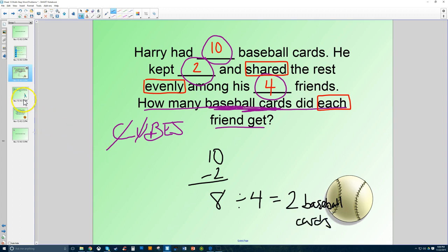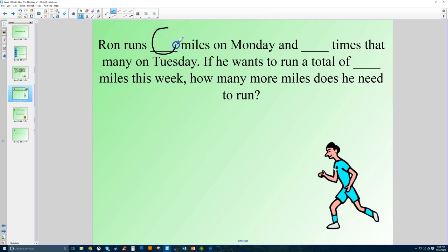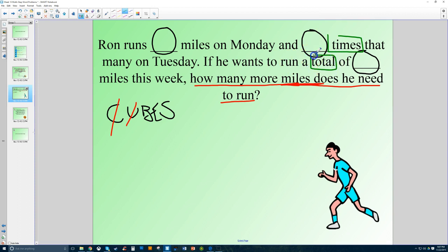Let's take a look at another one. Ron runs a certain number of miles on Monday and a certain times that many on Tuesday. So I know that on Tuesday he runs more than on Monday. So I know that's going to be some multiplication there. If he wants to run a total of... So this is obviously a larger number. If it's a total of miles this week, how many more miles does he need to run? So I have already taken care of the circling my numbers, or lack thereof, as there aren't any numbers actually in this. But we'll fill those in later. Underlining the question is my next part. So how many more miles does he need to run? And then B, I'm going to box my keywords. I see times up here. I also see the word total. And how many more?